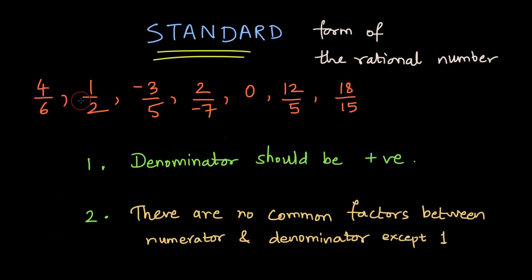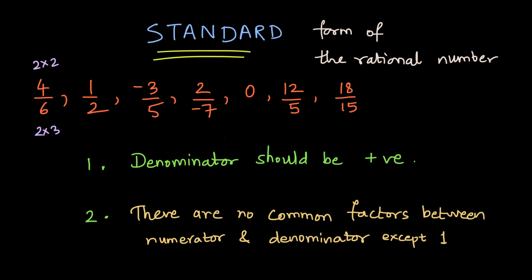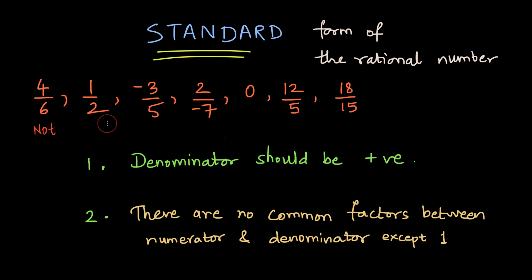Now we will select the rational numbers in the standard form from the given list. For 4 by 6, both 4 and 6 have the factor 2, since 4 can be written as 2 times 2 and 6 as 2 times 3. So 4 by 6 is not in the standard form. For 1 by 2, the denominator is positive and 1 and 2 do not have any common factors other than 1, so this is in the standard form.